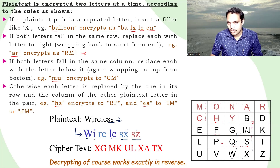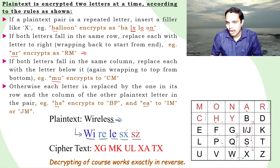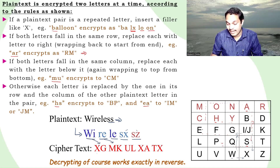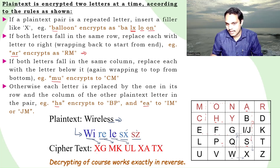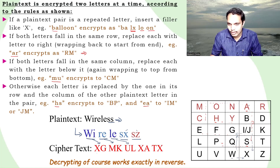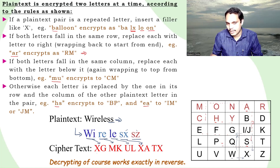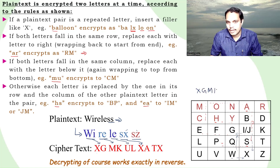For R-E: R and E are in different rows and columns. R is replaced with M and E is replaced with K. So R-E becomes M-K. For L-E: L and E are in the same column, so L is replaced with the letter below it — U — and E is replaced with the letter below it — L. So L-E becomes U-L. For S-X: both in the same column, so S becomes X and X wraps back to A. For S-Z: S becomes T and Z becomes X. The full ciphertext is X-Z, M-K, U-L, X-A, T-X.